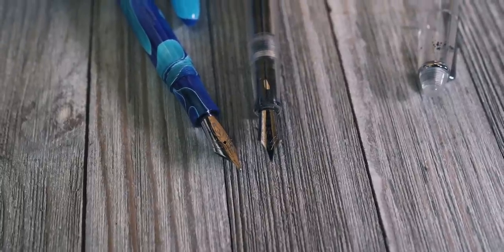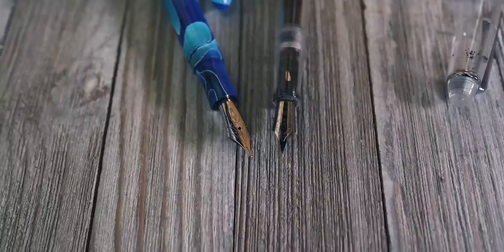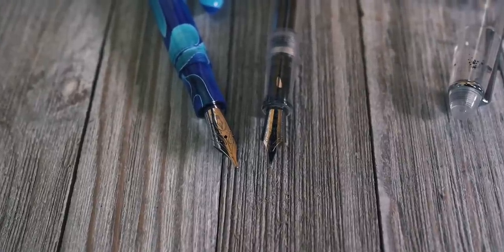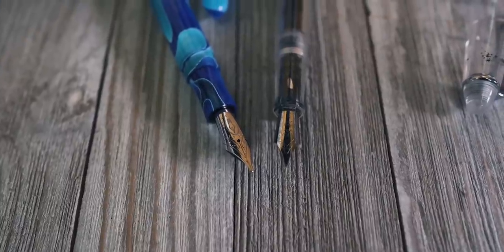The degree of line variation will depend on how well the edges of the stub are polished. A highly rounded stub may not provide much line variation, but will be smoother than a sharper stub nib that produces more dramatic line variation.